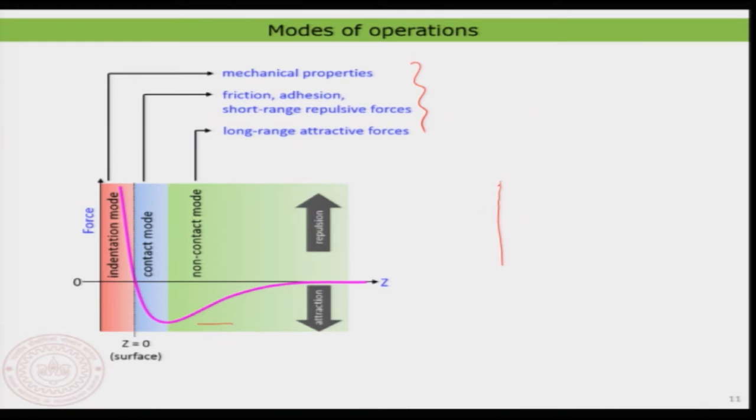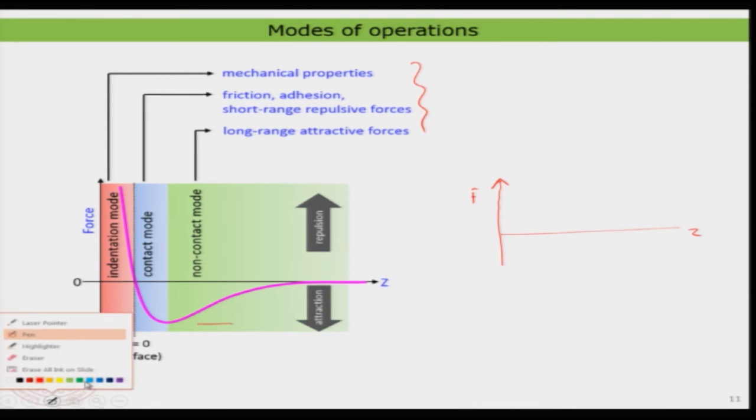Atomic force microscopy has been widely used in ambient conditions because you sometimes come across biological samples or any type of material. This method is much more versatile than scanning tunneling microscopy. Therefore, you will also find it used in normal ambient conditions. In that case, the force curve has a slightly different shape — that is what I want to show you here.